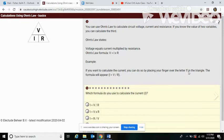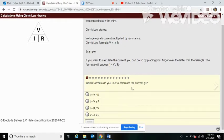Example: if you want to calculate the current, you can do so by placing your finger over the I in the triangle. The formula will appear: I equals V over R. So if I block I, it's I = V / R. Which formula do you use to calculate the current I? Well, it's right here.